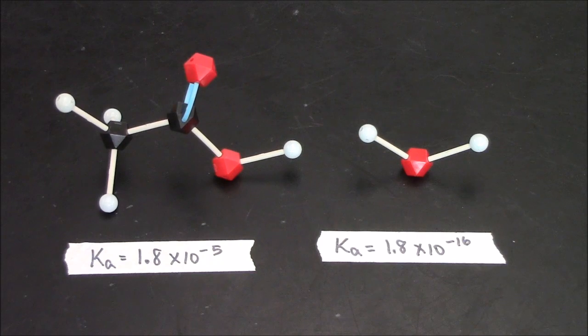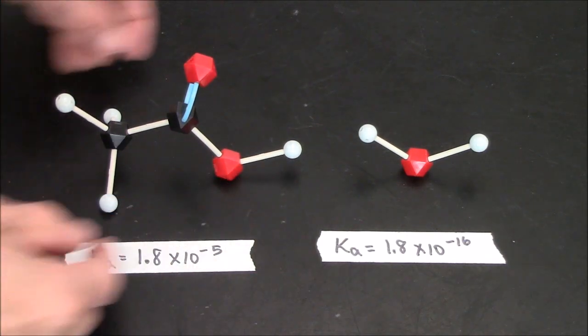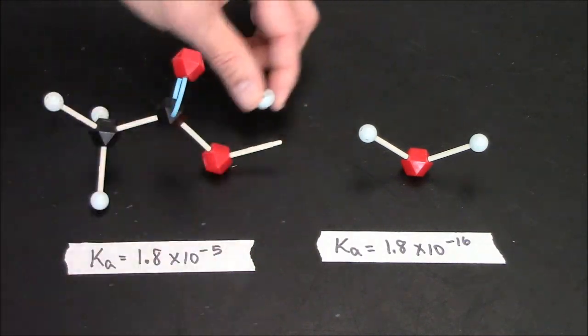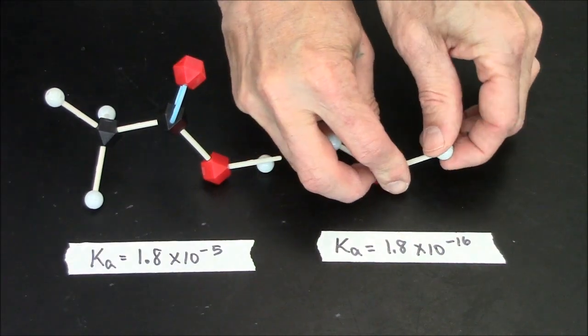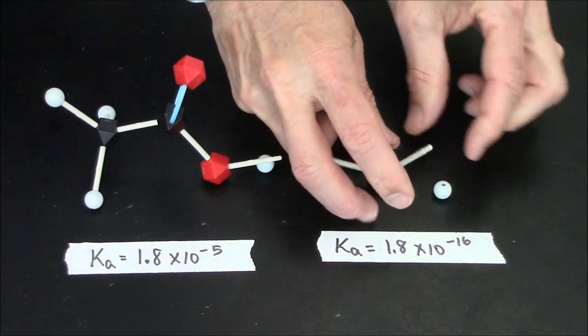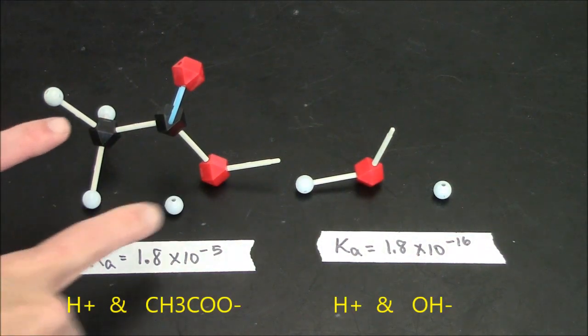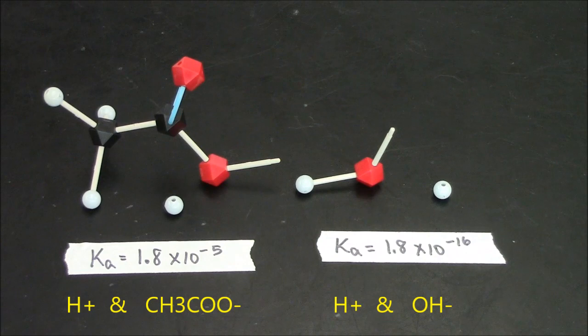The type of bond broken is the same in each case. It's this OH bond. The proton comes off. This is the dissociated form of acetic acid. This is the dissociated form of water.